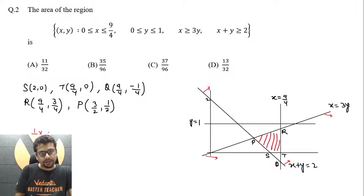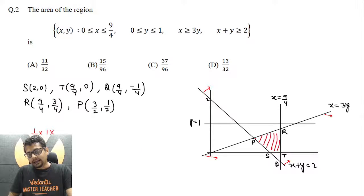So half into what will be the base? The difference of y coordinates of Q and R. So Q, R difference in y coordinate is one. The difference in x coordinates—P is here, Q and R have the same x coordinates, so that will be the height. So 9 by 4 minus 3 by 2, which is 9 by 4 minus 6 by 4, equals 3 by 4.